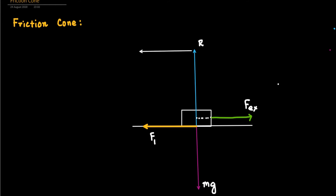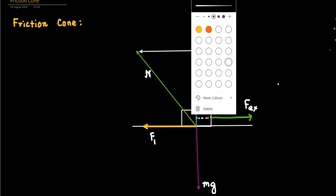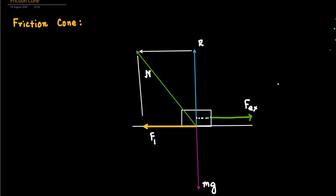Taking FL as one side, we can draw a rectangle. The diagonal of this rectangle is the resultant N. N is the resultant force of the limiting friction FL and the normal reaction R. The other sides of the rectangle are imaginary and are denoted by dotted lines. N is the resultant, which is the diagonal of that rectangle.